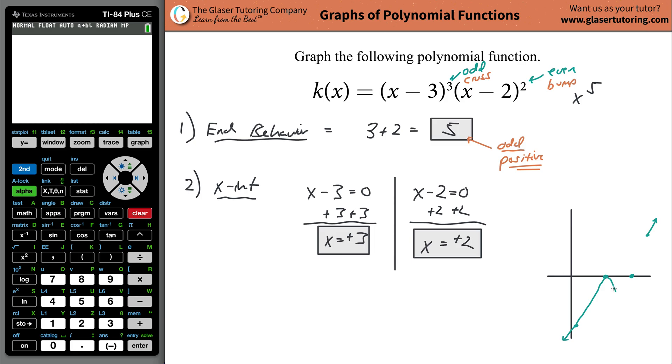So I'm going to move this over a little bit. This is going to come up, and it's going to bump and come back down. Now when we look at our intercept at x equals three, we realize that came from this factor, and that factor has an odd power, and it should cross on that x-axis.